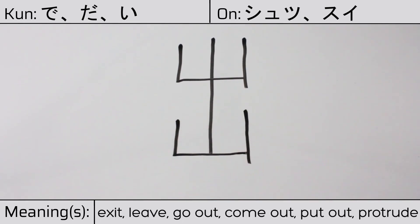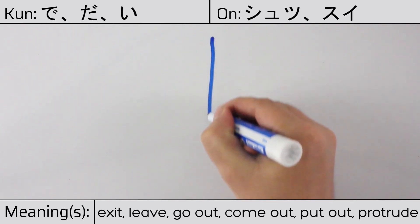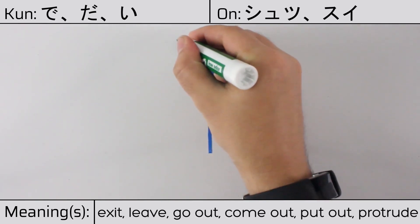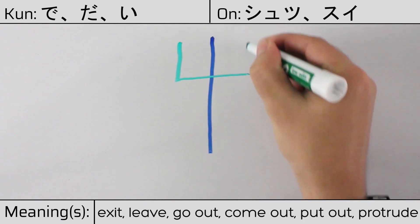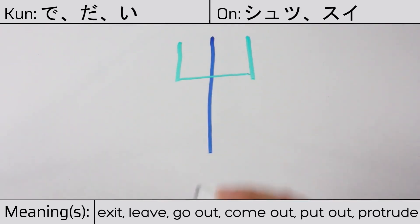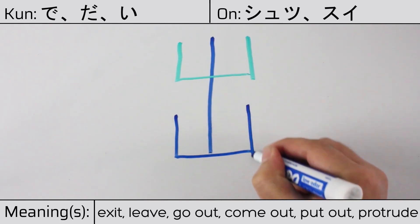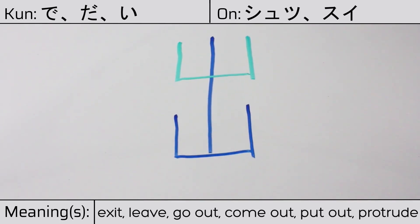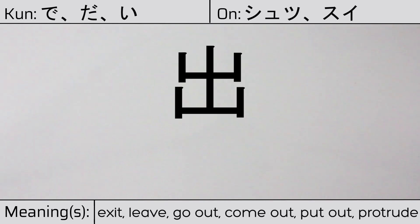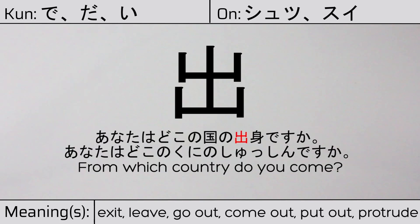This character is made up of the following radicals or parts: the mountain kanji yama, and the container box or open box radical. You can remember this kanji by the following hint: distant mountains sticking out, or appearing behind nearer ones. Our example sentence is: From which country do you come?